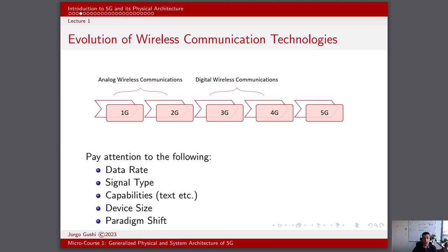4G LTE, or the fourth generation long-term evolution, was introduced in the late 2000s and early 2010s. It introduced higher speed data rates ranging from tens to hundreds of Mbps using LTE technology. The signal type included orthogonal frequency division multiplexing, or OFDM, for data transmission. 4G offered significantly faster mobile internet, high quality video streaming, and VoIP, or voice over internet protocol.